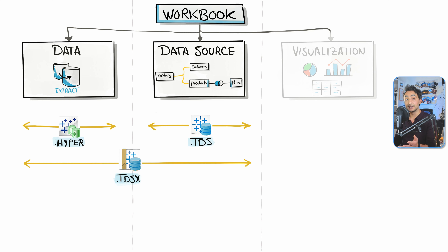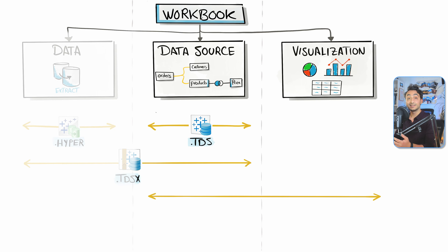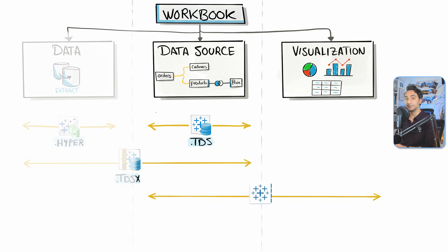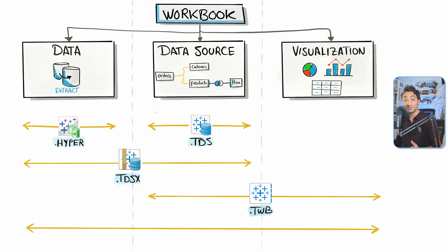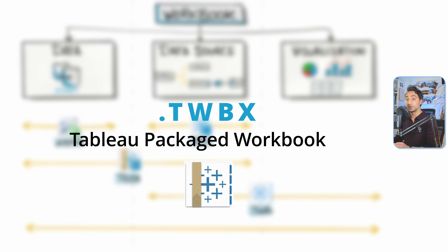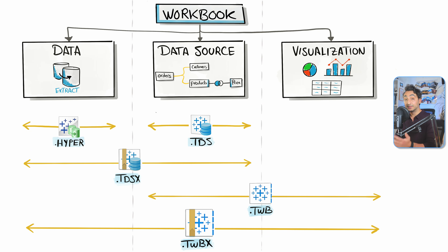If colleagues are also interested in the visualizations, you can send a file containing the visualizations and the data source. You then decide whether to include data or not. If you don't want to send data inside it, you send a file called Tableau Workbook, TWB. And if you want to send everything — the whole package: the extract, the data source, and your visualizations — you send a Tableau Packaged Workbook, TWBX.